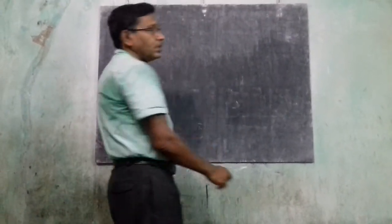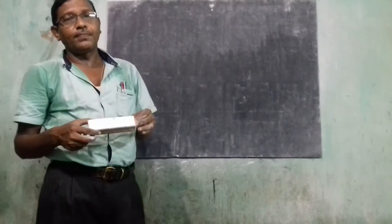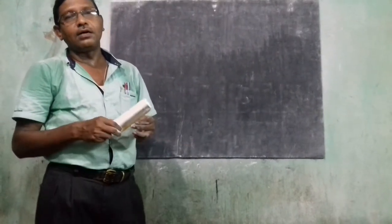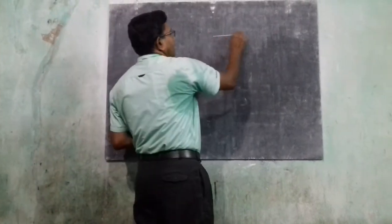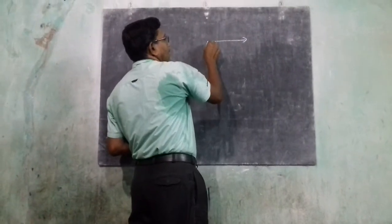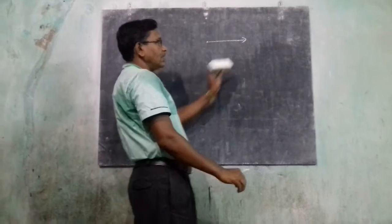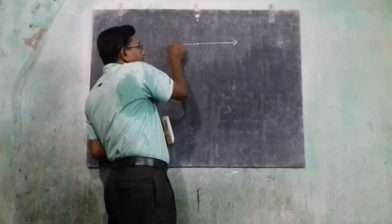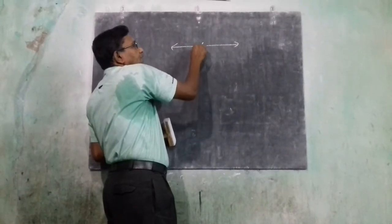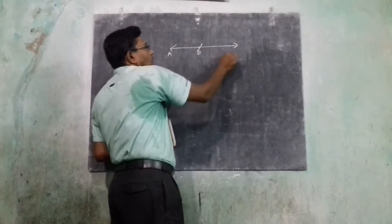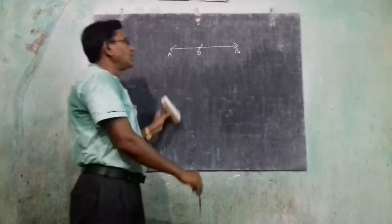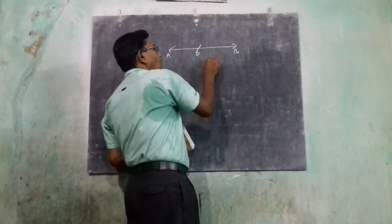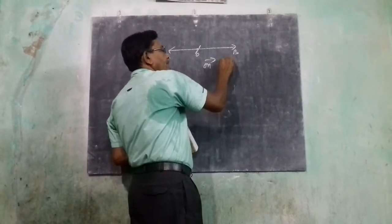Before that, let us study the ray. A ray has one endpoint as the starting point and extends infinitely in one direction with no ending point. Also, one line gives two opposite rays — ray OA and ray OB are opposite rays, written as OA and OB.